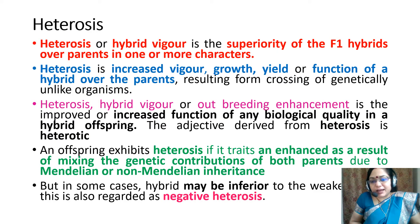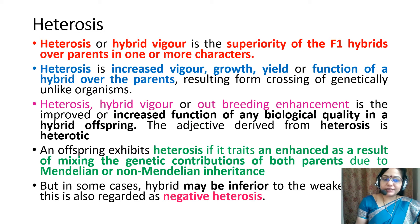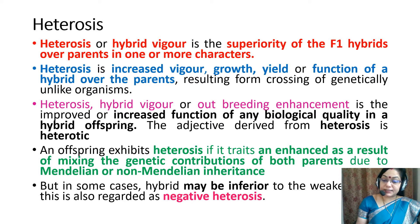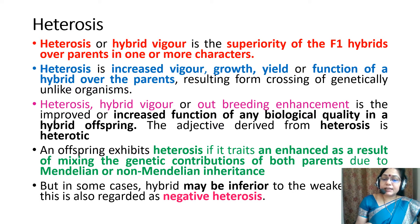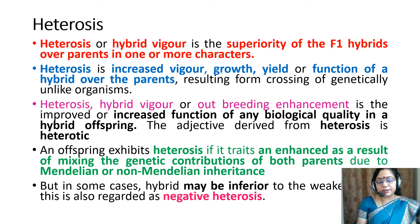Heterosis or hybrid vigor is the superiority of the F1 hybrid over parents in one or more characters. It is the increase in vigor, growth, and yield function of a hybrid over their parents resulting from crossing of genetically unlike organisms. It is an improved or increased function of any biological quality in hybrid offspring. The offspring exhibit heterosis if enhancement in any trait results from mixing of genetic contributions of both parents due to Mendelian or non-Mendelian inheritance. In some cases, the hybrid may be inferior to the weaker parent, which is regarded as negative heterosis.